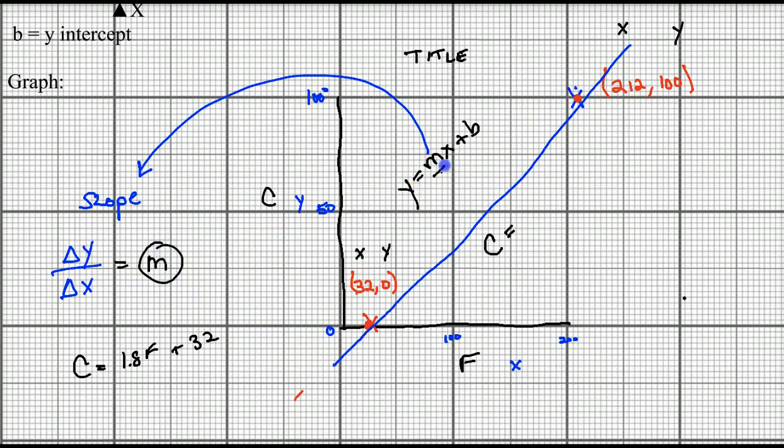That's going to go in your equation here. So whatever you solve for. So c is equal to whatever you solve for, for m, times x. Now we know x is going to be our Fahrenheit.